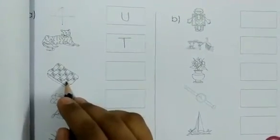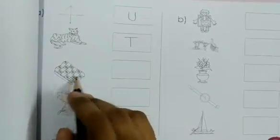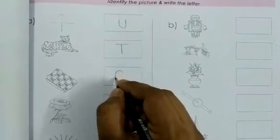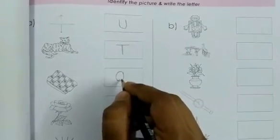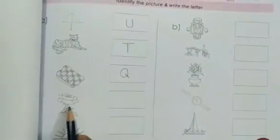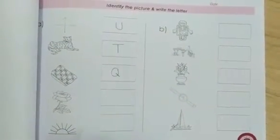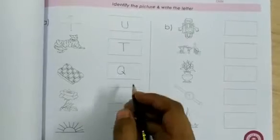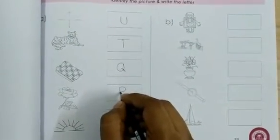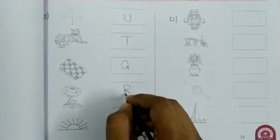Then, Quilt. You'll write here Q. What is this? This is Rose. R for Rose. Isn't it?